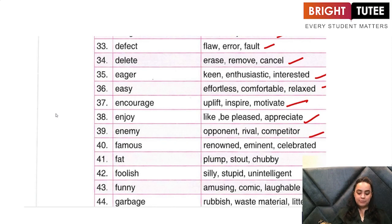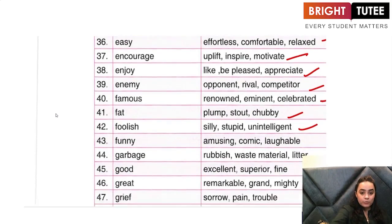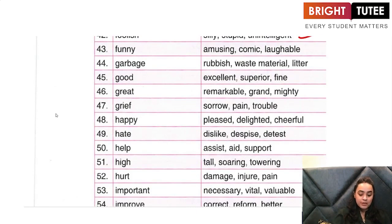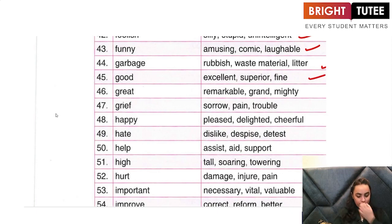'Famous' — is somebody who is renowned, who is eminent, who is a celebrated personality. 'Fat' — plump, stout, chubby. 'Foolish' — is silly, stupid, unintelligent. 'Funny' — somebody who is amusing, comic, laughable. 'Garbage' — the synonyms for garbage: rubbish, waste material, litter. 'Good' — is excellent, superior, fine. 'Great' — something which is remarkable, grand, mighty. 'Grief' — is sadness, sorrow, pain, trouble.